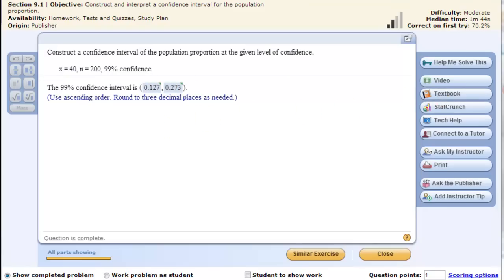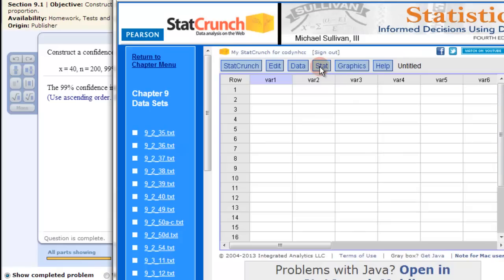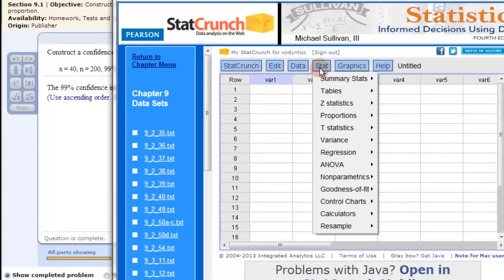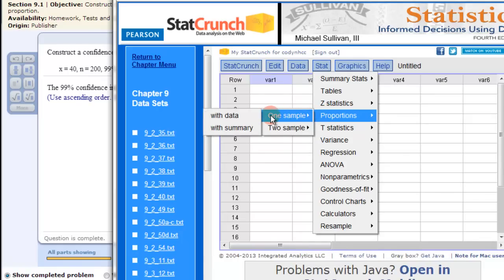So we go to StatCrunch and we open it up. Then we go to Stat, then we highlight proportions, then we choose one sample, and then we go with data or summary.